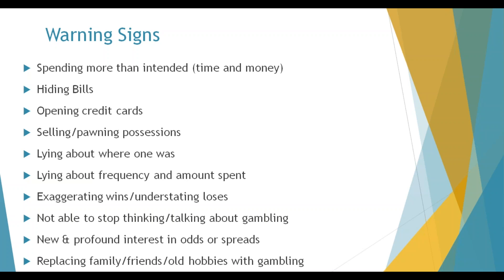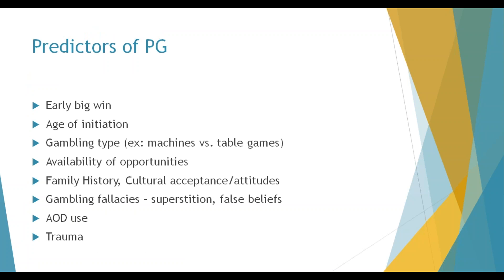A strong predictor of problem gambling is an early big win. Dr. Heather Chapman from the Cleveland VA, who has treated over 3,000 problem and disordered gamblers, found that a disproportionate number of disordered gamblers report having a very large, substantial win early in their gambling career. When asked to quantify this, she confirmed the figure was well above 90% — she could barely recall a handful of people out of over 3,000 who did not report a big win. So an early big win is a very strong predictor of a future problem.